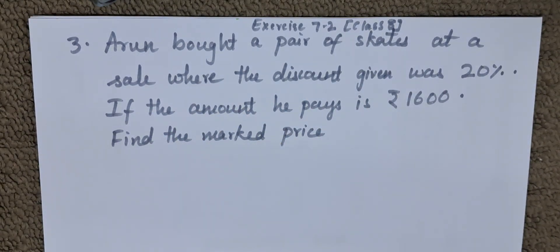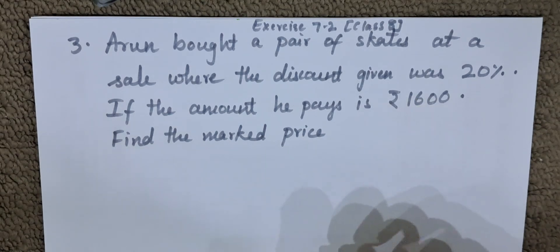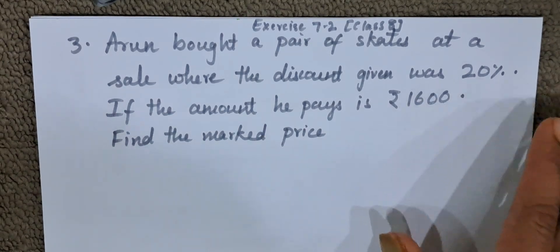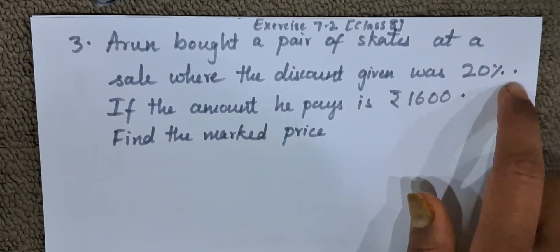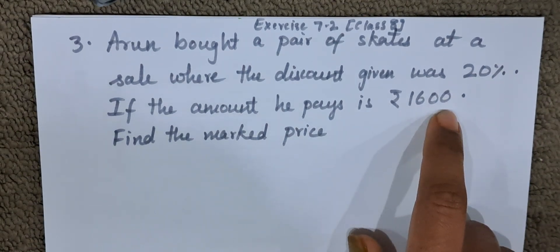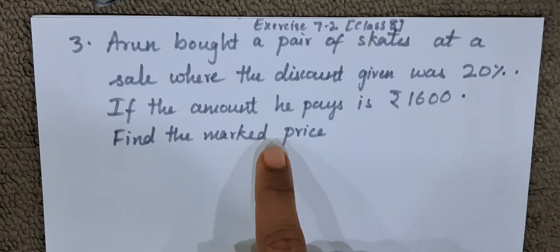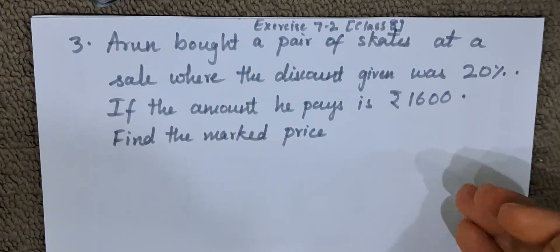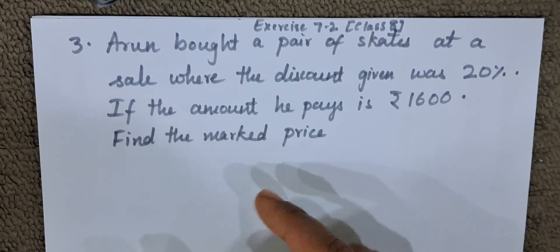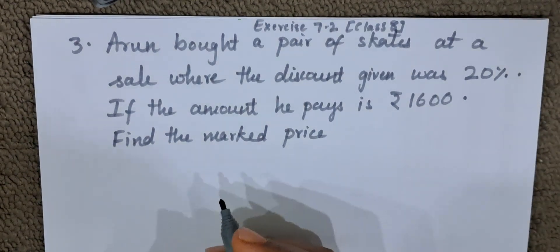Here they are telling us that Arun bought a pair of skates and he paid Rs. 1600 for the pair of skates, and they were marked as 20% discount. So after 20% discount, he had to pay Rs. 1600. Now they are asking what is the marked price. Marked price means when the discount was not given, what is the full price they are asking us.